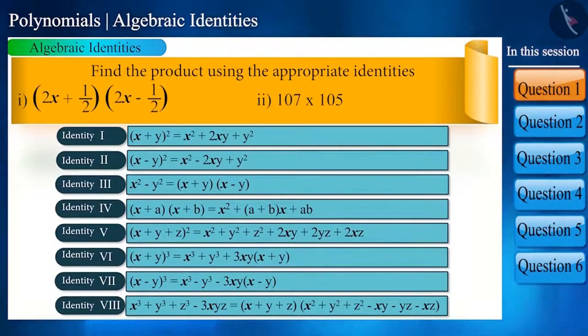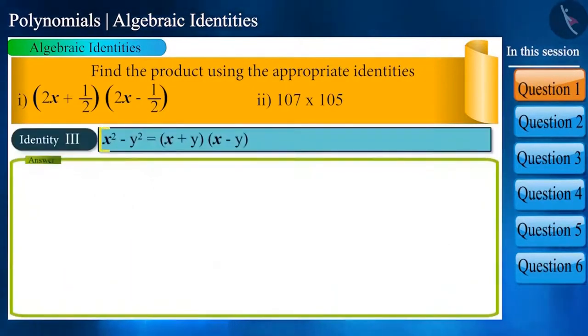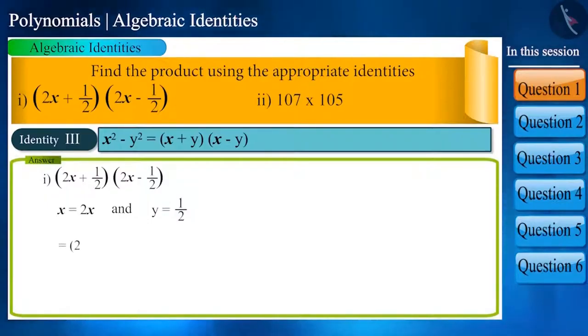In which identity there is a sign of addition and subtraction between two terms? That is identity 3: x square minus y square is equal to (x + y) into (x - y). That is, (2x + 1/2) into (2x - 1/2) is equal to (2x)² minus (1/2) to the power of 2.